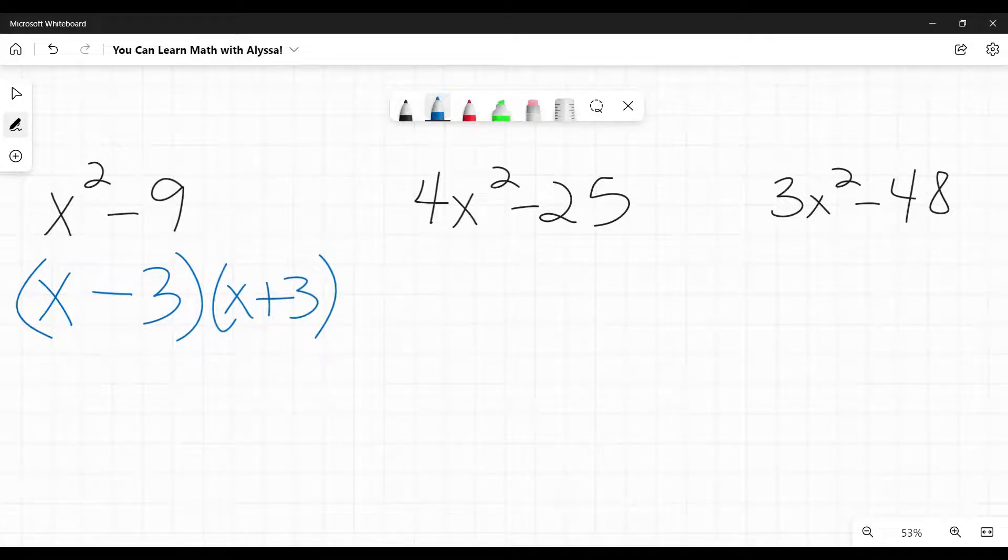Second one in the middle, just because there is a number in front of it, do not dismiss it out of hand. If that number is a perfect square, you can still do this. Four is a perfect square, square root is two. X squared, perfect square, square root is x. 25 is a perfect square, square root is five.